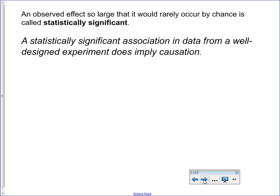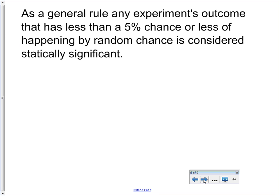So this is the big deal. It's a statistically significant association in data from a well-designed experiment implies causation. And as a general rule of thumb, what we're going to say is if something has then a less than 5% chance of happening by random, it is considered statistically significant. And we'll talk in class about where this 5% comes from. But that's going to be our general rule of thumb. Sometimes, depending on what we're trying to prove, we may have higher or lower levels of significance.